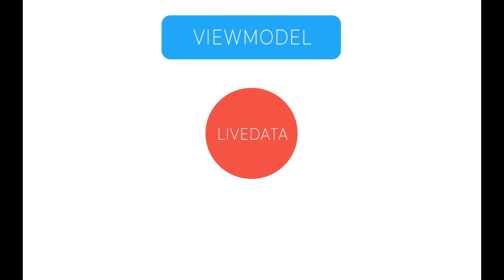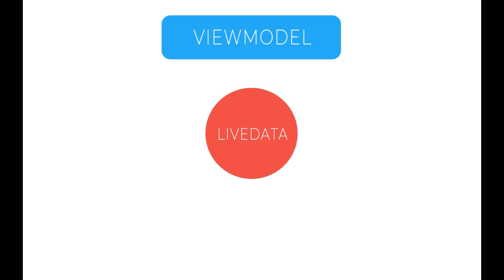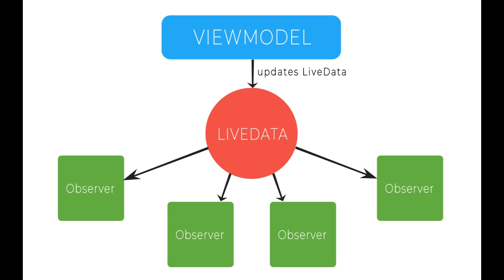Consider this example — I think it's a really great way to conceptualize live data and the view model concept. Instead of the activity being the center of the universe, think of live data as being the center of the universe. The view model contains all of the business logic, and you can have any number of observers listening for changes to the live data. The observers are in the activities. Business logic means if statements, loops, queries to the database, switch statements — all that stuff.